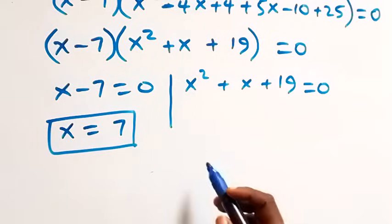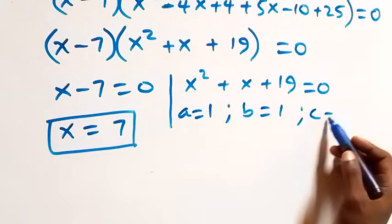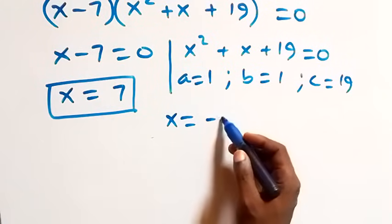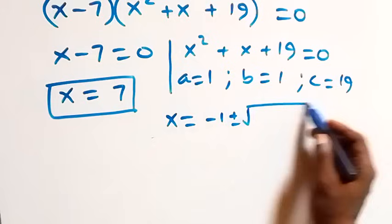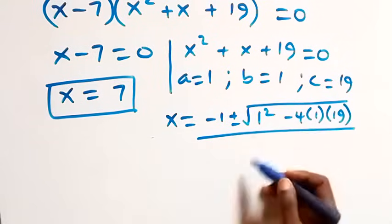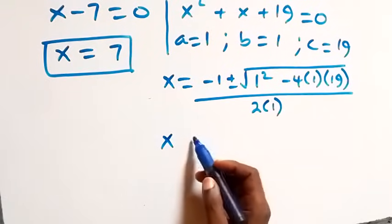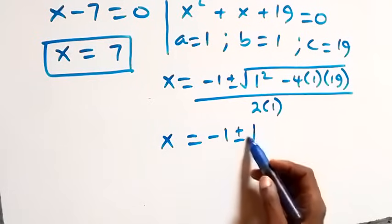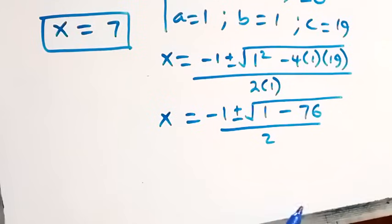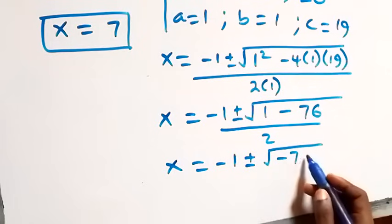From the quadratic x squared plus x plus 19 equals 0, we have a equals 1, b equals 1, and c equals 19. Applying the quadratic formula: x equals minus 1 plus or minus square root of 1 squared minus 4 times 1 times 19, over 2 times 1, which gives x equals minus 1 plus or minus square root of 1 minus 76, that is square root of minus 75, over 2.